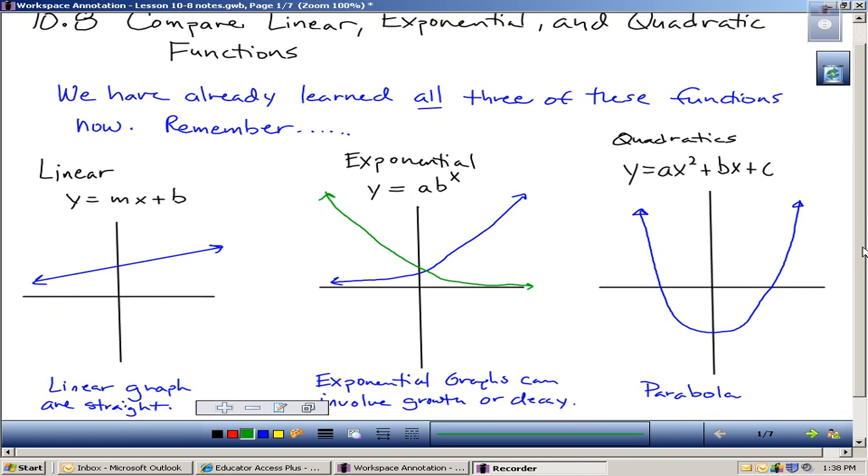And then finally, over the last probably month and a half, we've gotten into quadratics. This is a standard form of a quadratic, y equals ax squared plus bx plus c. Quadratics always graph into a u-shaped graph, which is called a parabola. We spent time sketching parabolas in Chapter 10. That was a big part of your Chapter 10 test, sketching a parabola correctly. And we had sketches in standard form. So those are the three types of functions that we have learned about.